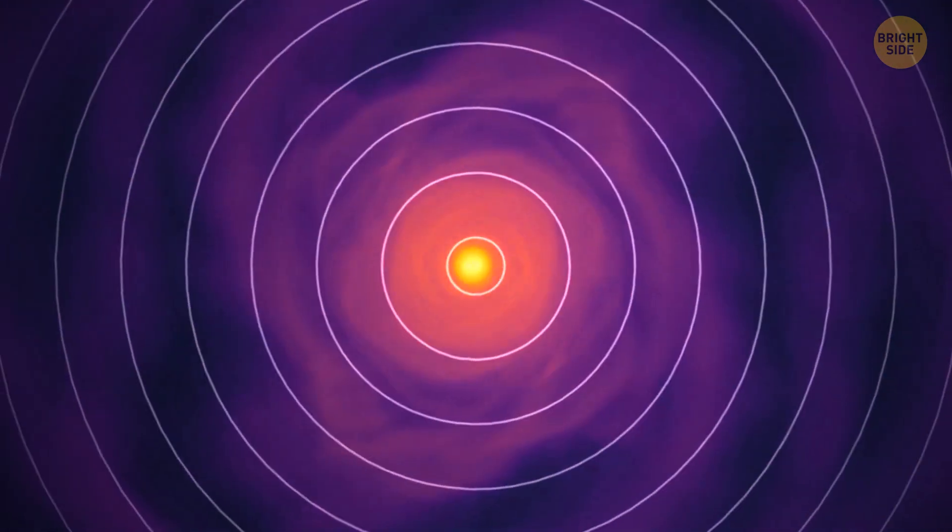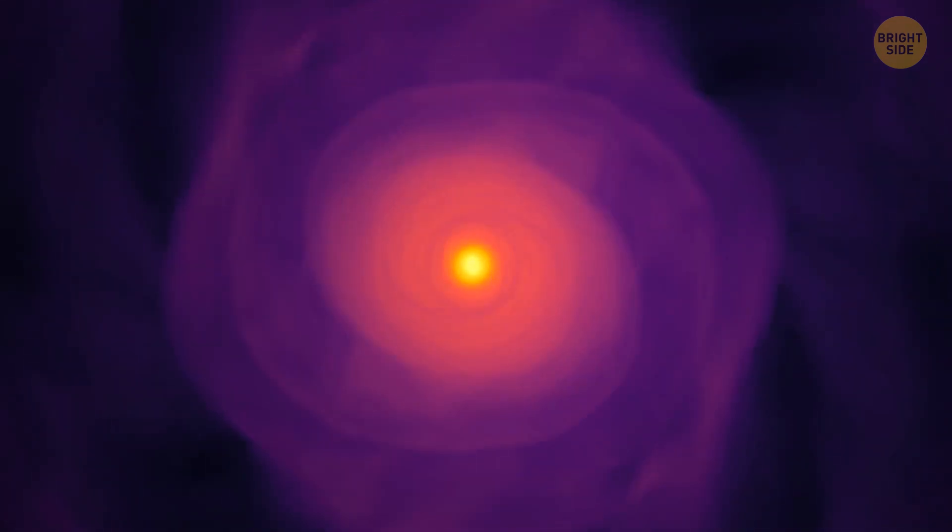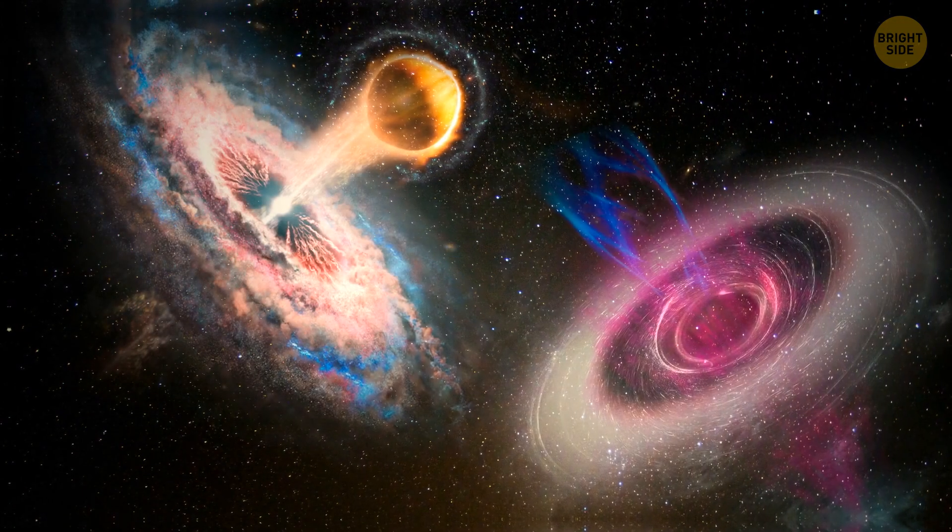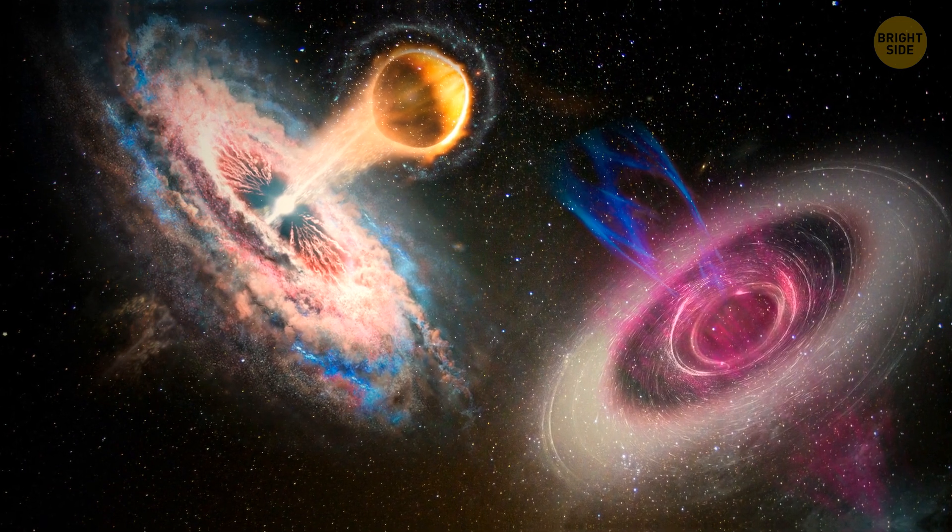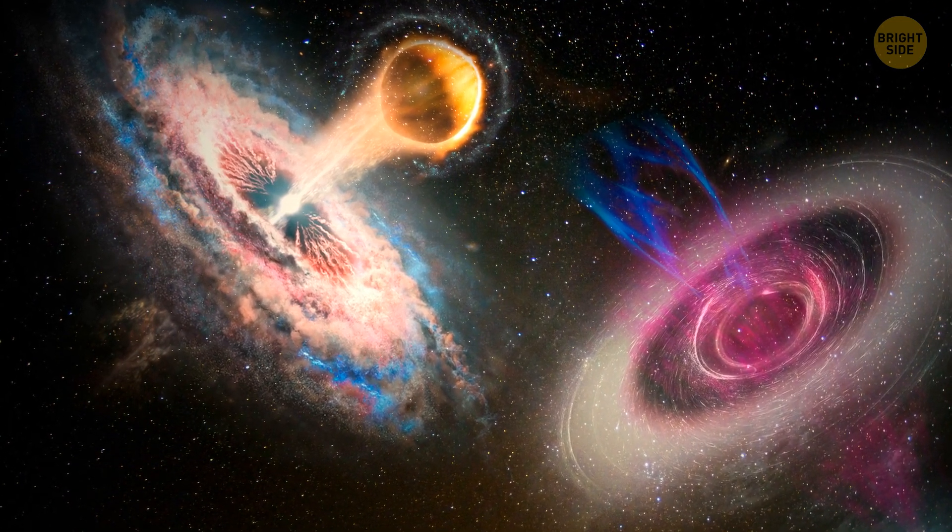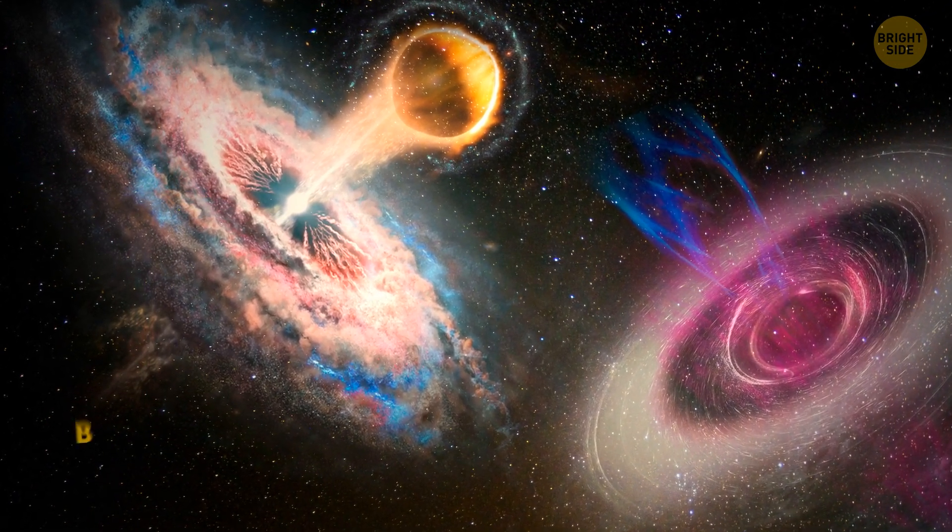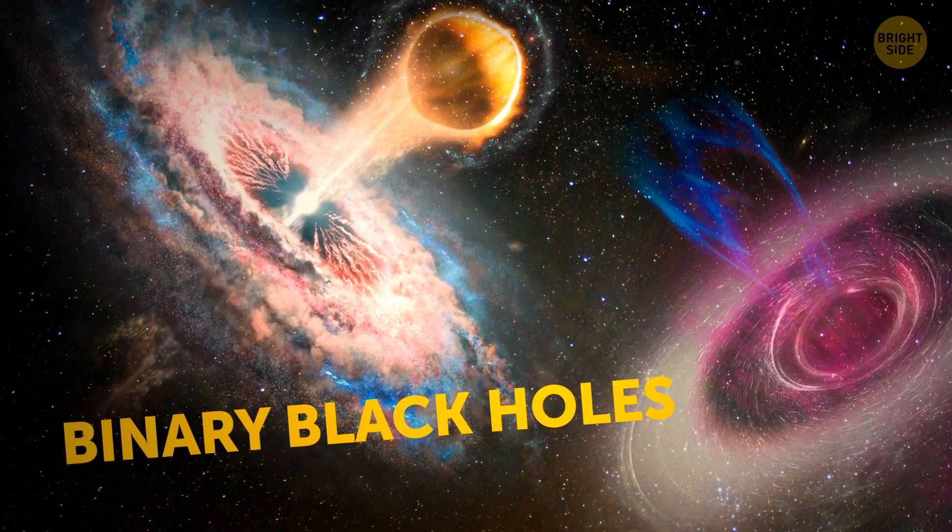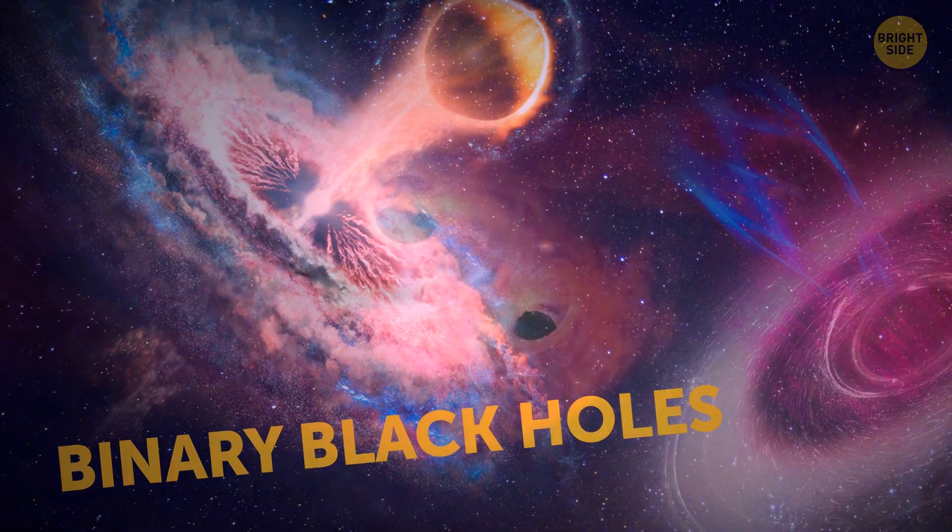If we talk about the recently discovered pair of black holes, it might still take them several hundred million years to crash into each other. But by observing their behavior, scientists can figure out how many binary black holes there are that are about to collide in the universe.